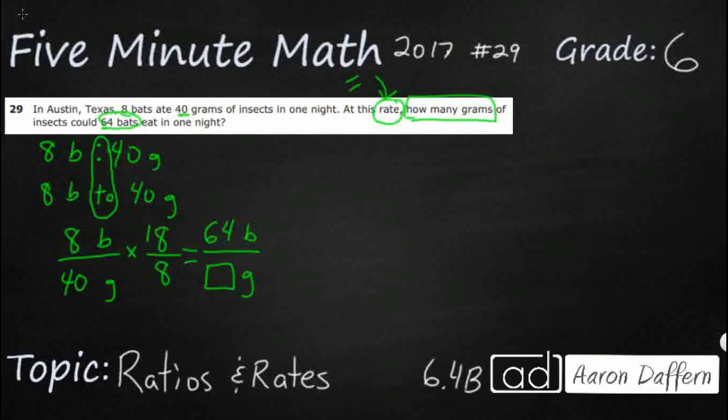The reason why we always have to do that is because this is really just 1. 8 over 8 is really just 1. Anytime you multiply anything by 1, you get the same answer. So this new fraction over here is going to be the same, it's just going to look slightly different. That's the whole thing with equivalent fractions.